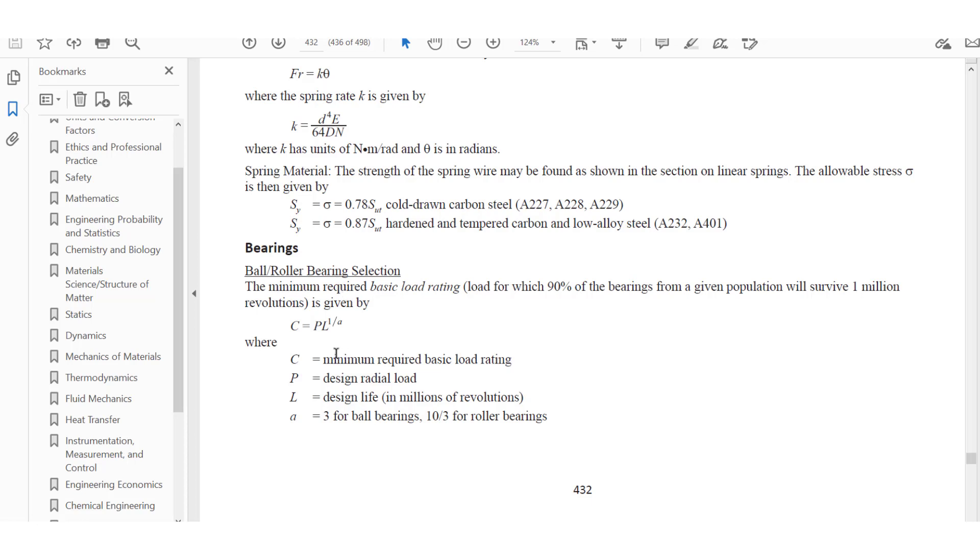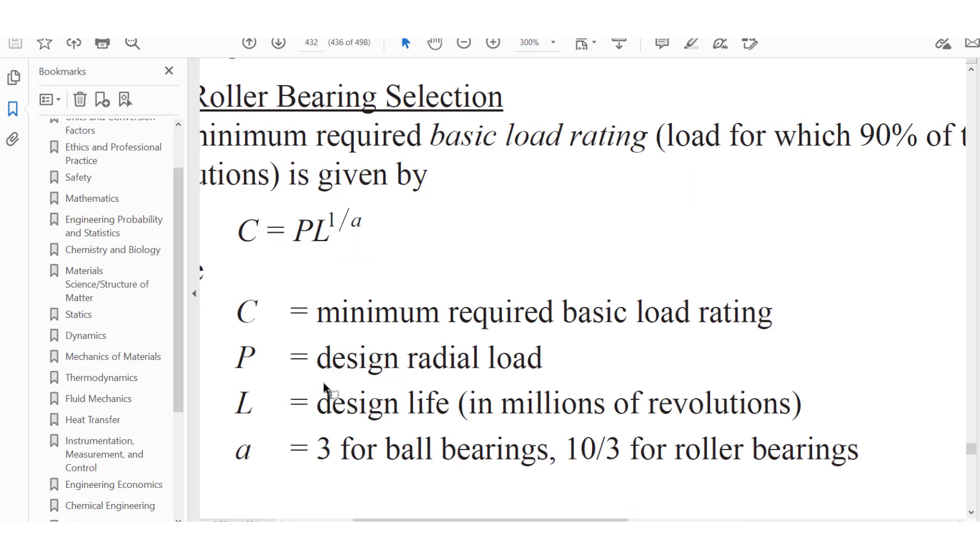So you're only assuming that you have one load which is our P, the design radial load. C is the minimum required basic load rating, so the units for C will be pounds. The design life L is going to be in millions of revolutions, so this is important. And a here is 3 for ball bearings and 10/3, which is 3.33, for roller bearings.